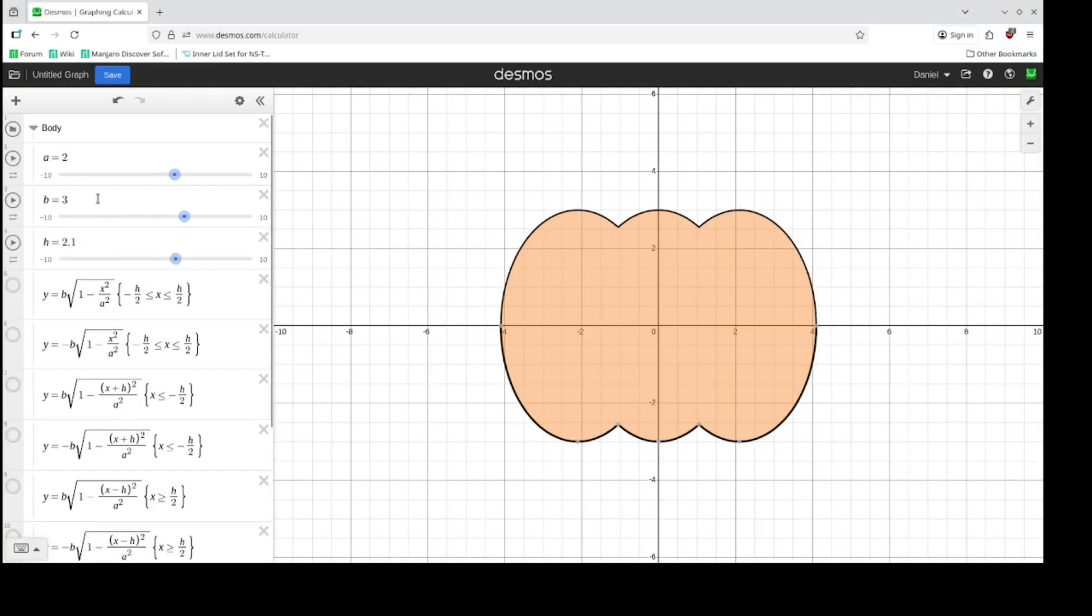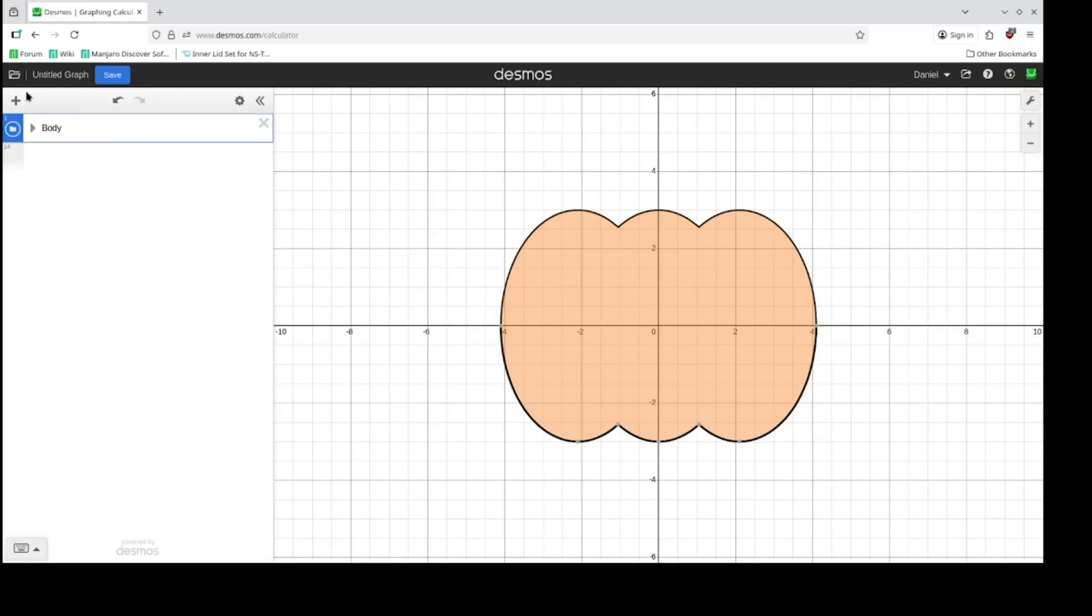All right, I've done a bit of tidying by putting everything under one folder called body. Now let's make a folder for the stem. We're just going to simply make it three ellipses—two for the side, one for the top. Let's go minus x squared. Pick a different color. Let's have the ellipse start off around about here, so let's call that four, and squeeze this in a little bit.